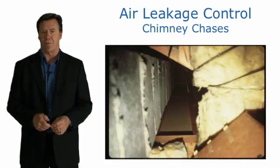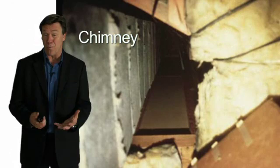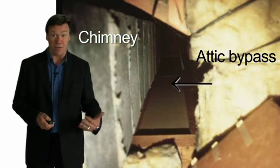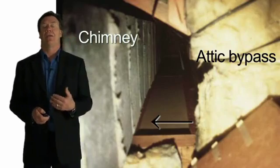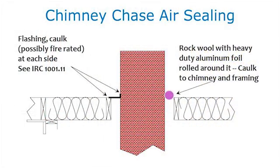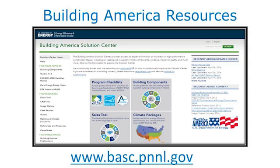Chimney chases where the framing area around the chimney is open would be a code violation — that has to be sealed because the air space around a chimney can exhaust a lot of air. It's important to recognize that fire-resistant materials may need to be used here. The Building America program at the Department of Energy has excellent guidebooks on how to seal these difficult areas, available at www.basc.pnnl.gov.